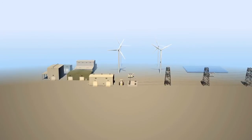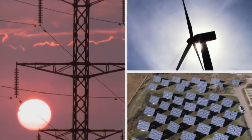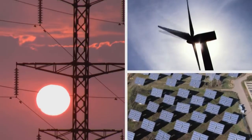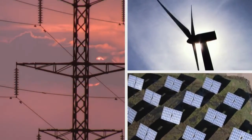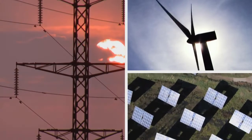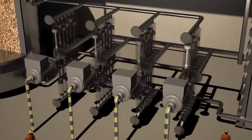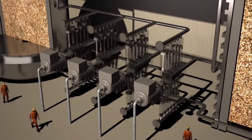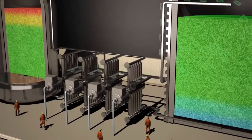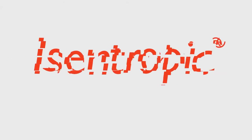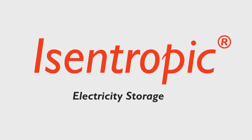In a future where successful grid-scale electricity supply strategies are a flexible combination of conventional energy supplies, renewable energy resources, and electricity storage, the robust combination of engineering excellence and naturally abundant resources makes Isentropic PHES one of the best forms of electricity storage in the world.